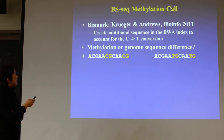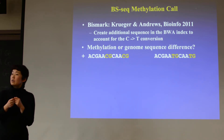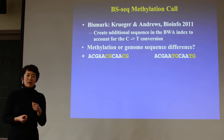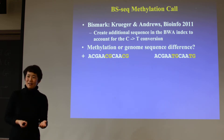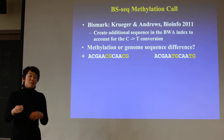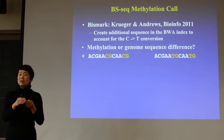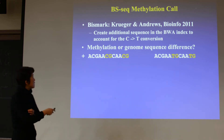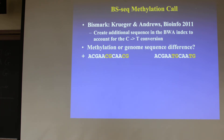One potential complication: sometimes our reference genome differs from the individual being sequenced. If you sequence regular DNA from a person, their DNA might have a T where the reference has a C. How do you know whether you're seeing a real variant in that person's genome, or a sequencing error, or a bisulfite-converted C? For example, if you have two reads at a location, how do you reliably determine whether it's genuinely a TG in that person's genome, or a CG that was converted to TG by bisulfite?